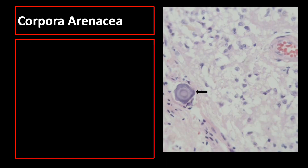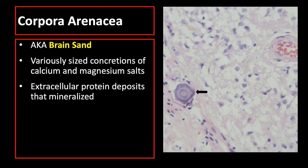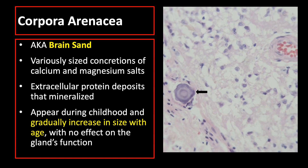Another histologic structure to identify in the pineal gland is the corpora arenacea, as pointed by the black arrow, also known as brain sand. Corpora arenacea are variously sized concretions of calcium and magnesium salts — extracellular protein deposits that mineralize. They appear during childhood and gradually increase in size with age, with no effect on the gland's function.